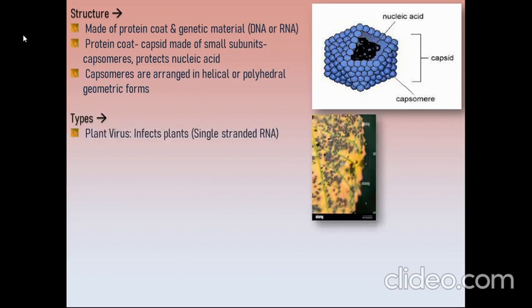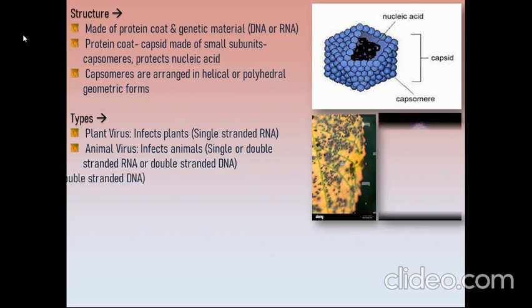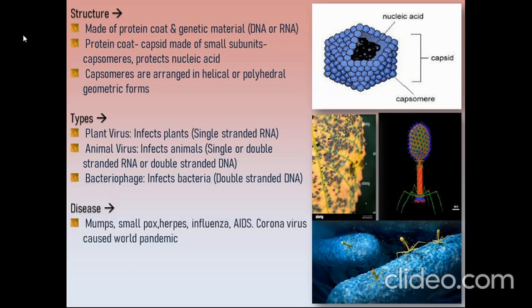Viruses are of three types: plant viruses, which infect plants and have single-stranded RNA; animal viruses, which infect animals and have single- or double-stranded RNA or double-stranded DNA; and bacteriophages, which infect bacteria and mainly have double-stranded DNA.